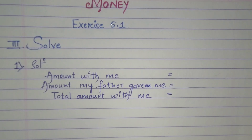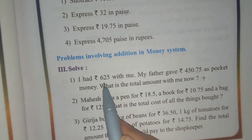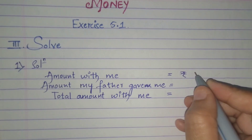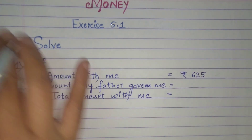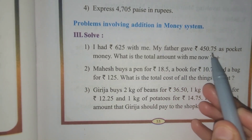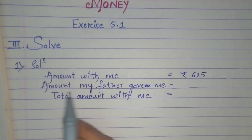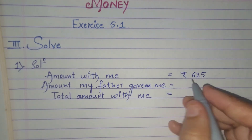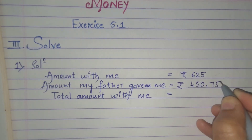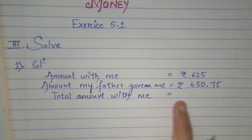So let's do it. While solving such examples, first we need to write the particulars. The first line is: I had 625 rupees with me — so the amount I am having is 625. Next, my father gave me 450 rupees 75 paise — so the second line should be: amount my father gave me is 450 rupees 75 paise. The total amount with me is what you have to calculate.